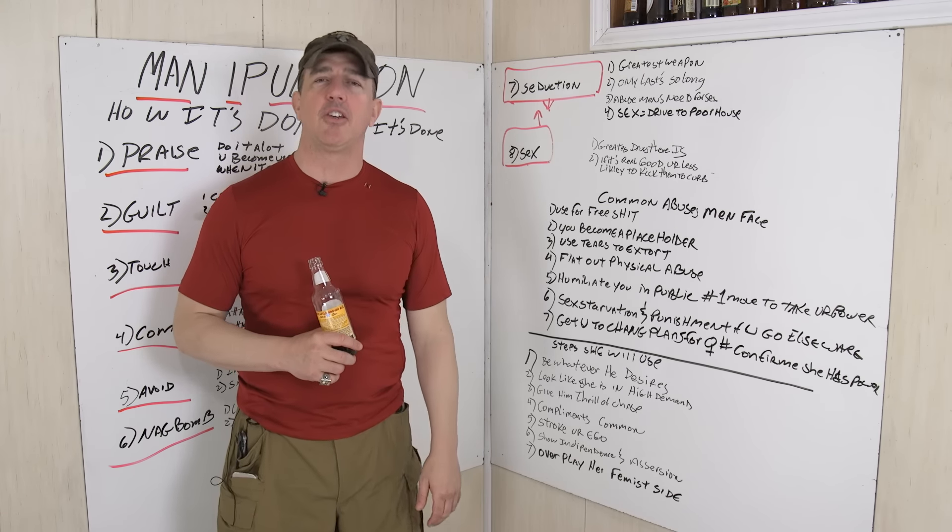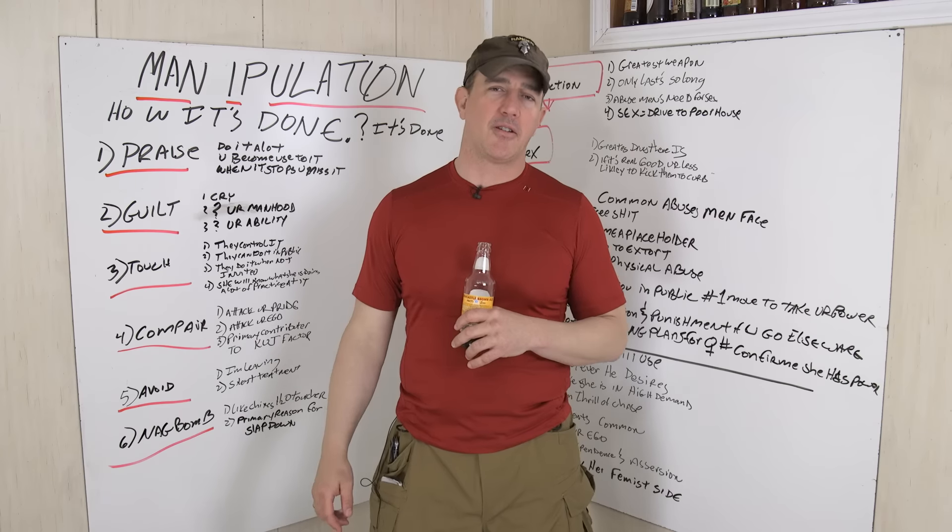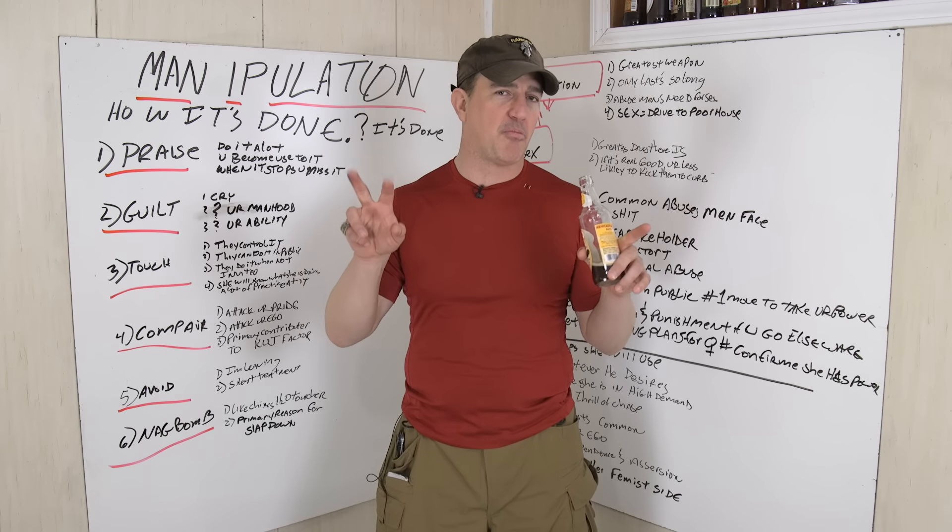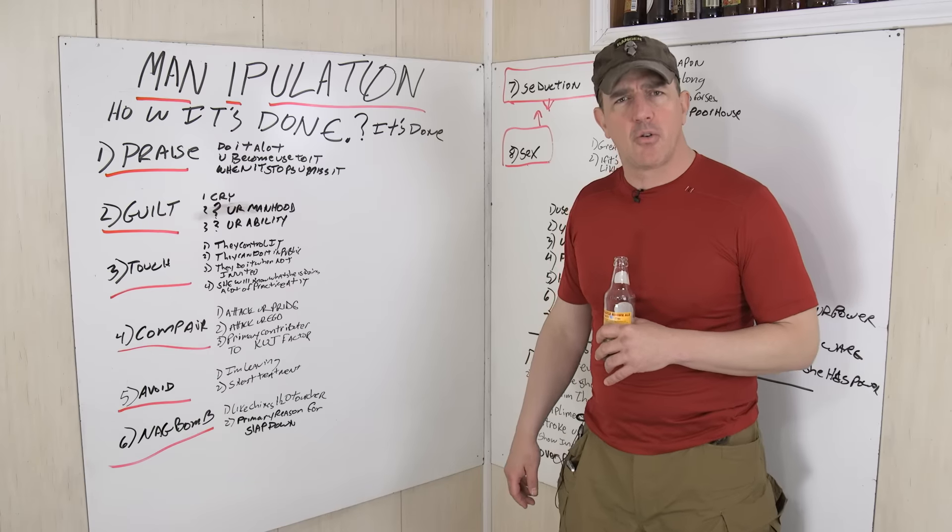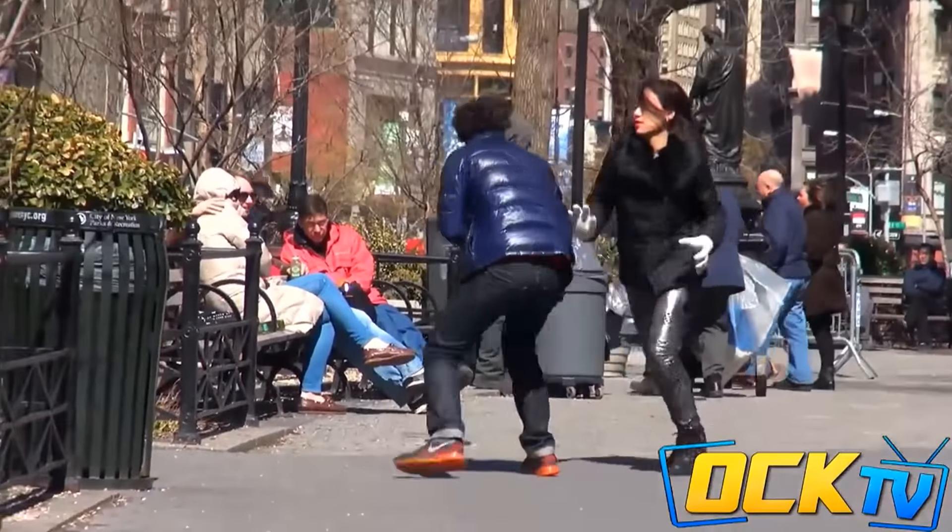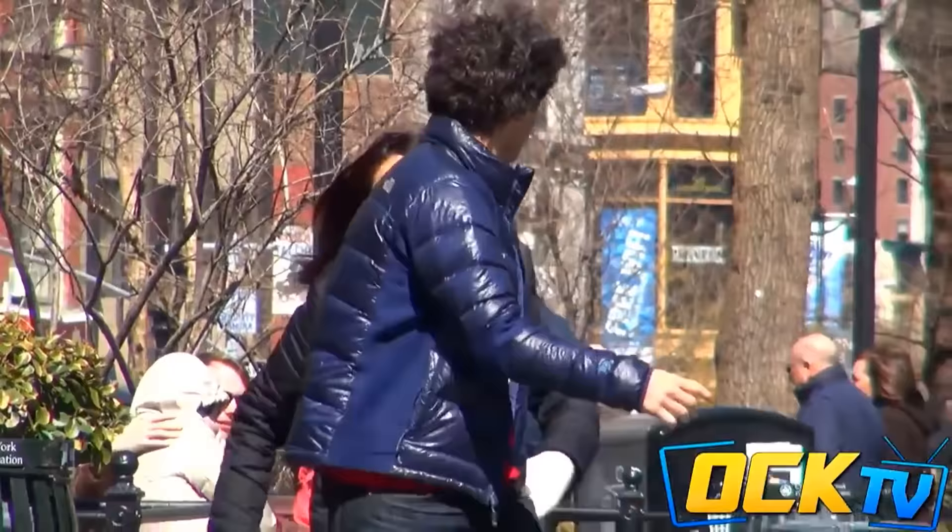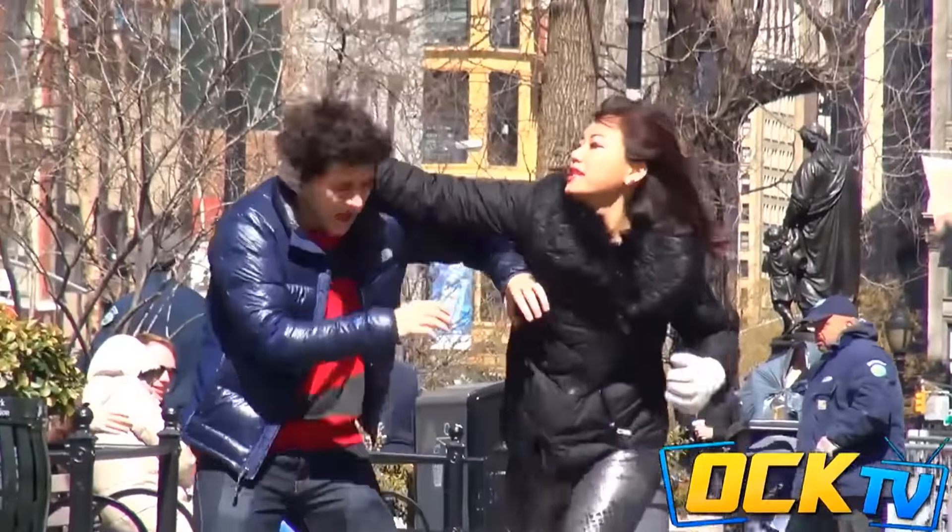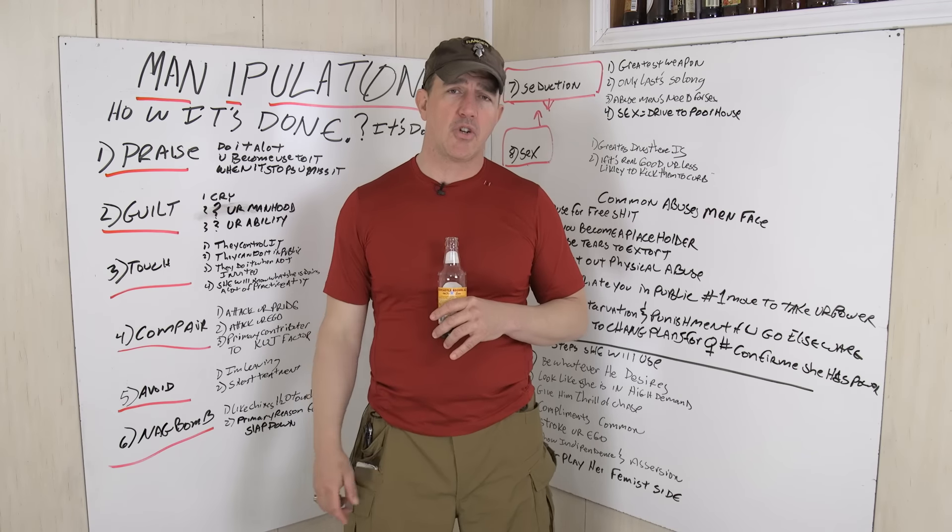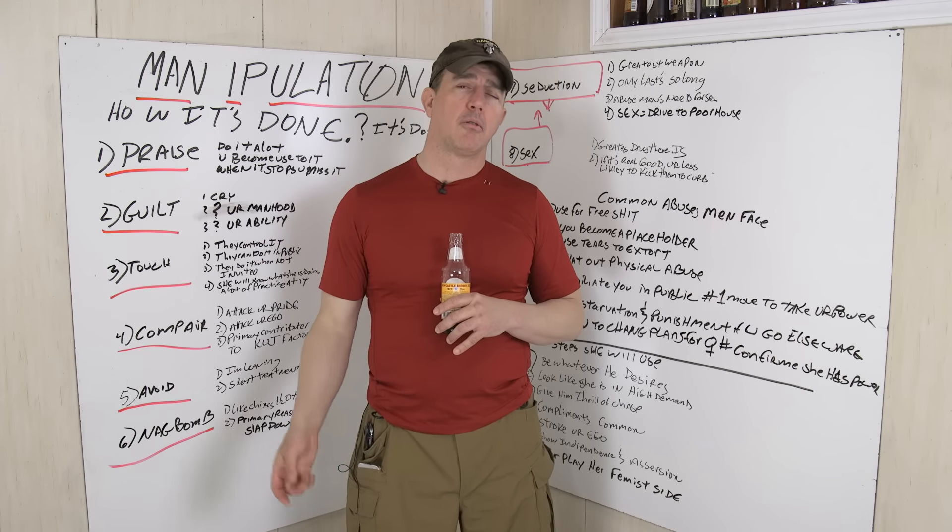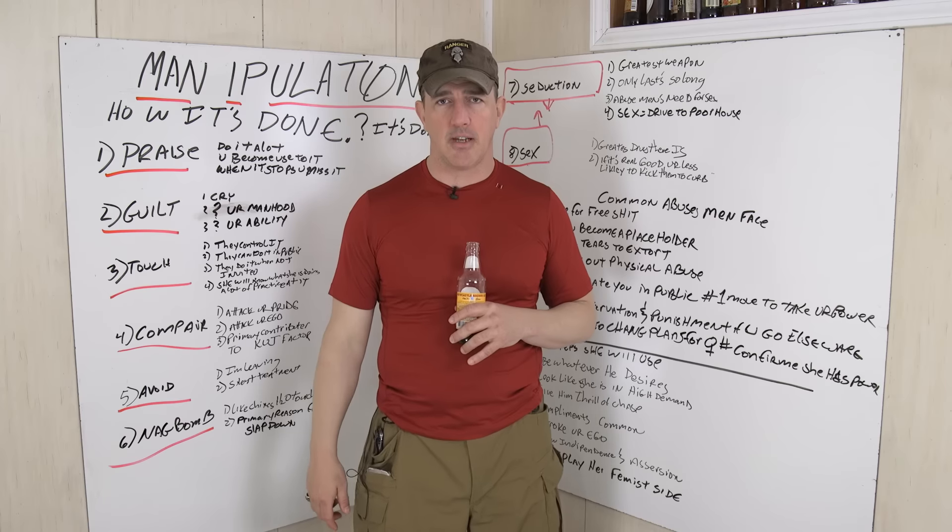Next we have humiliating you in public. And they do this to make it known that they're taking the power in the relationship. And when that happens in public, it's a double-edged sword. Because if you say something about it, all the white knights will be like, hey man, you just need to calm down. And then if you just sit there and take it, you're a simp. And the only way for your dudes to win in this situation is to put the battle on hold, go home and kick her to the curb.